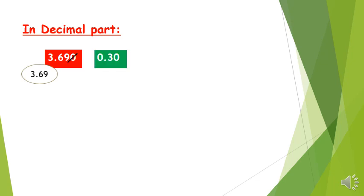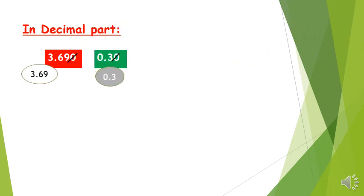In the number 0.30, the decimal part also ends with a zero. So this zero is useless and 0.30 is equal to 0.3.